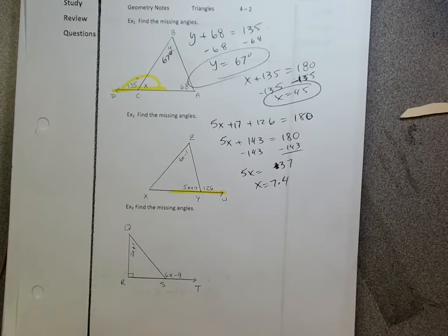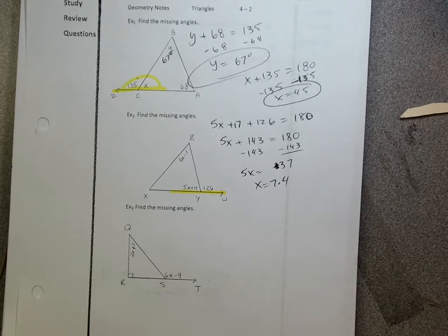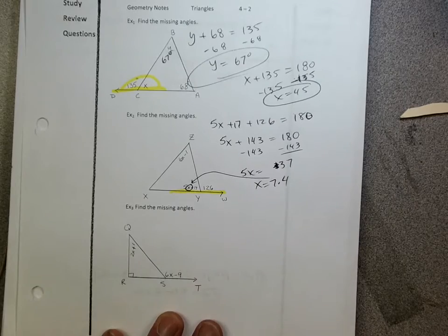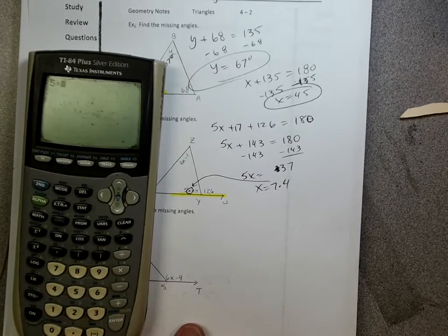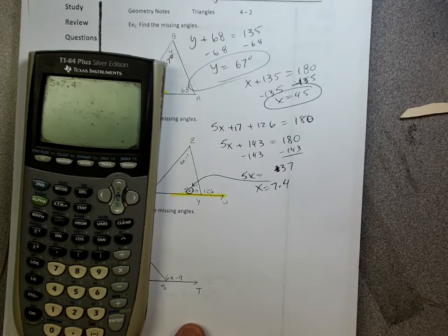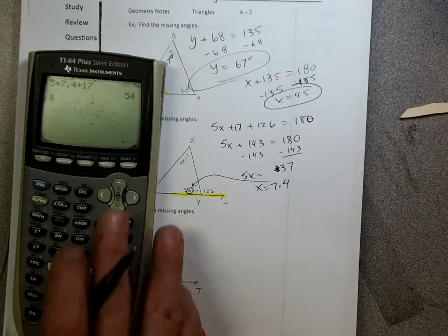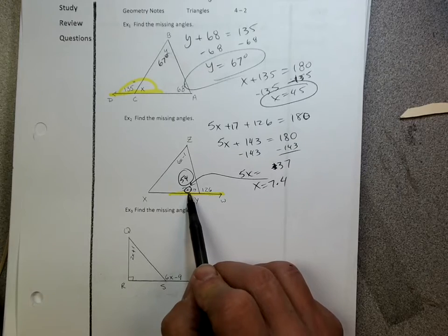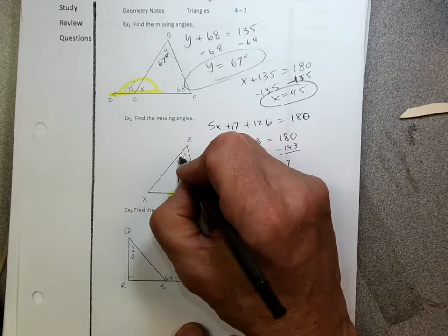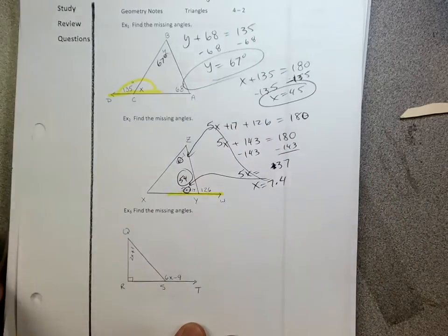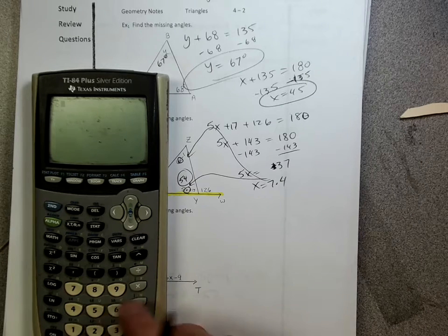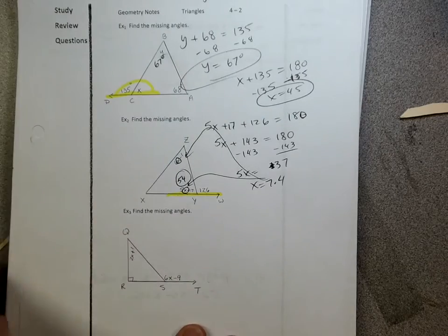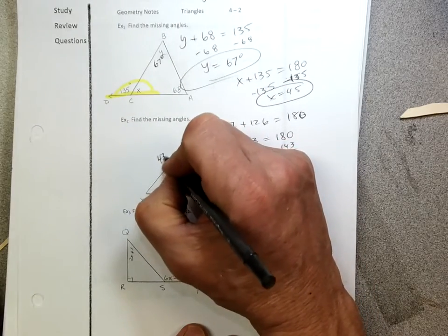But that's not my answer, right? That's not my answer. 7.4 is x. Let's find out what the angles are. So let's plug it back in. So let's put 7.4 right there. So let's see, what is, oh, you're way ahead of me, plus 17. So I get 54 for this angle. So I plugged it in with 5 times 7.4 plus 17. Let's plug it in right here. Okay, so let's go 6 times 7.4 minus 1. I get 43.4 degrees.